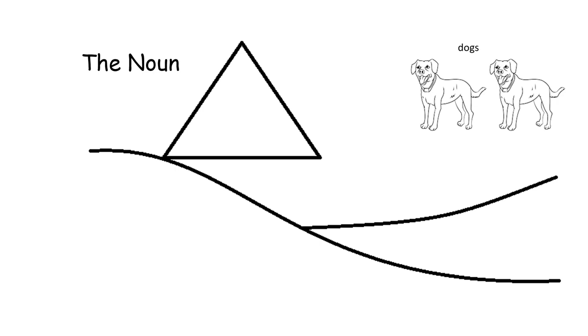The word dogs names the kind of animals that you see. Therefore, the word dogs is a noun.